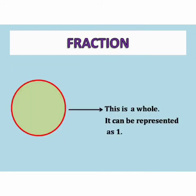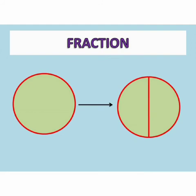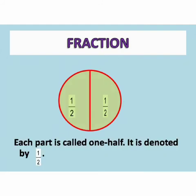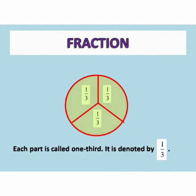See this circle. This is a whole and we can denote it by 1. If this circle is divided into two equal parts, then each part is called one half. It is denoted by one upon two. Now, we divide the circle into three equal parts. Each part is called one third. It is denoted by one upon three.